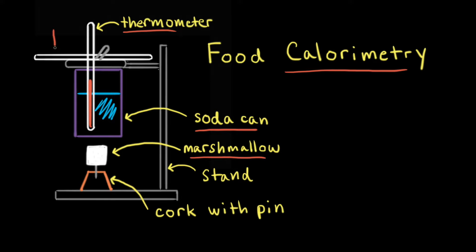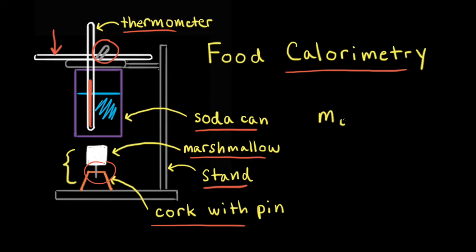If you take a stir rod and put it through the tab on the soda can, you can attach the soda can to a stand. Next, we can put our marshmallow on a pin that's attached to a piece of cork. Before we start the experiment, we need to take the mass of the marshmallow with the cork and pin — that's the initial mass — and we also need the initial temperature of the water, which we'll call T sub I.